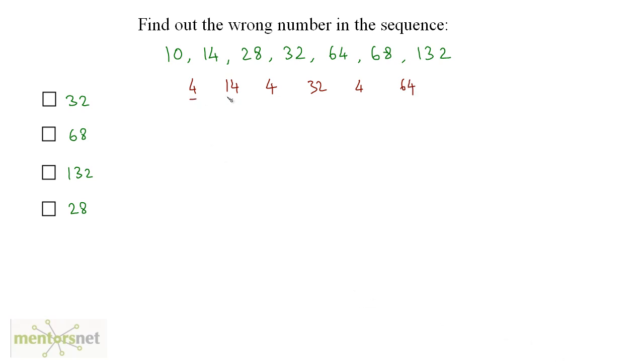Well, we have a pattern. We have 4s in alternate places. Alternately, we are adding 4. So let us keep them as it is. 28 plus 4 is 32. 64 plus 4 is 68. So these are alternate 4s. Now, how do you obtain 28 from 14? Well, if you multiply 14 by 2, that means if you double 14, you get 28. 32 times 2 is 64. Now, 68 times 2 should give you 132. Does it give you 132?